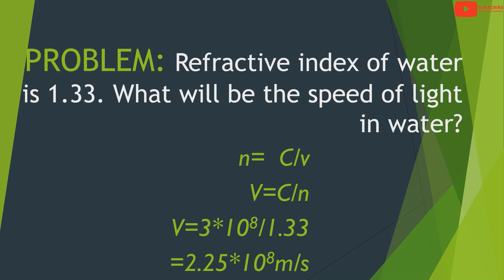Problem: The refractive index of water is 1.33. What will be the speed of light in water? Using n equals c divided by v, we get v equals c divided by n. Since c equals 3 × 10⁸ m/s, v equals 3 × 10⁸ divided by 1.33, which equals 2.25 × 10⁸ meter per second.